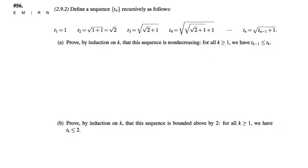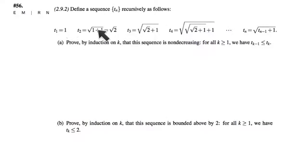In problem 56, we're given a sequence of real numbers defined recursively. A recursive sequence is one where we say what the first term is, and then every term is constructed in the same way out of the previous term. In this example, every term is constructed by taking the previous one, adding one to it, and then taking the square root.